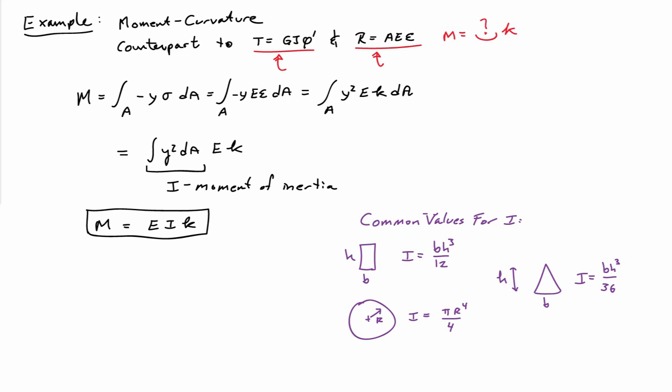Or if you have a triangular cross-section with height H base width B, it's I is equal to BH cubed over 36. So these are common values.